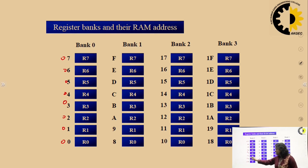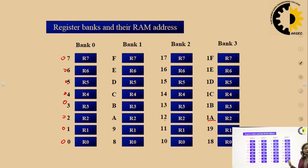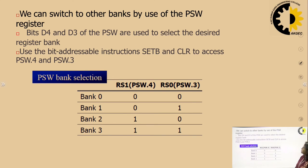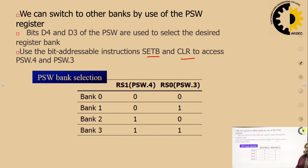Before accessing any register, we must select the bank first. For this purpose, we use the RS1 and RS0 bits of the Program Status Word. When RS1=0, RS0=0, Bank 0 is selected; 01 selects Bank 1; 10 selects Bank 2; and 11 selects Bank 3. We can switch from one bank to another by using PSW3 and PSW4 bits, using SETB and CLR instructions to set or clear these values.